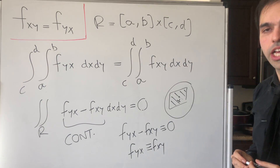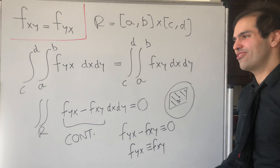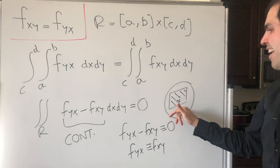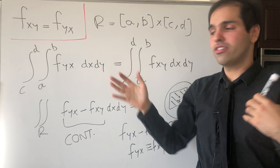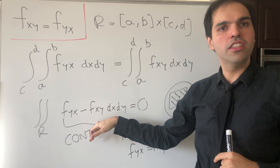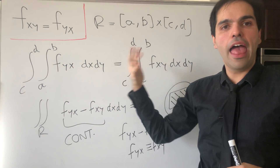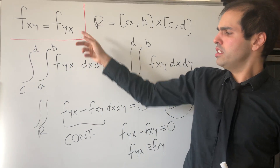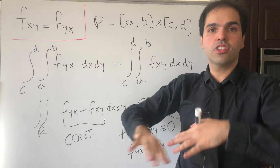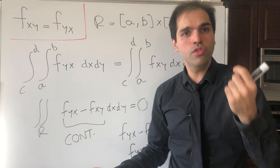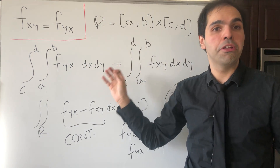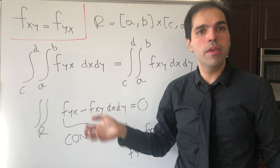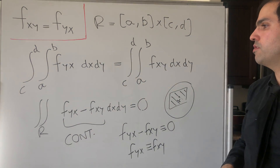And that proves Clairaut's theorem. So no messy difference quotients — just a very elegant integration. What's nice is this also explains why we need continuity, in this last crucial step and in Fubini's theorem. And this was very local: we don't actually need it to be continuous everywhere, just continuous at a little neighborhood of a point. So it's a very local result.